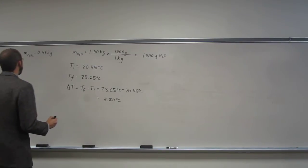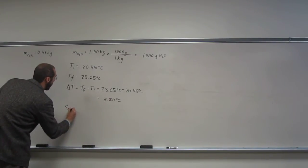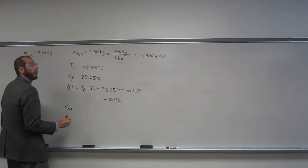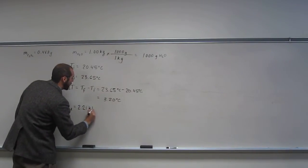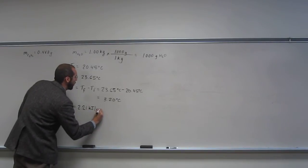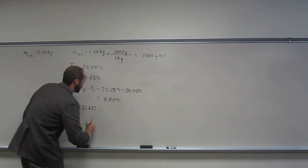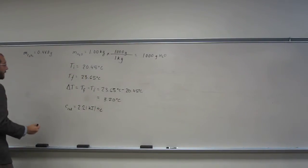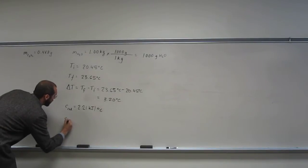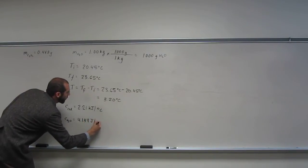So the heat capacity of the calorimeter, it gives you two. So Ccal is 2.21 kilojoules per degree Celsius. And of course, the specific heat of water is 4.184 joules per gram.